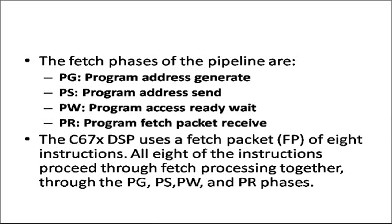The address generated in PG will be sent in the PS phase — program address send. The third phase PW is program access ready wait; the CPU waits until the memory location to be accessed is ready. Once it becomes ready, in the PR phase — packet receive — the data related to that address is fetched into the CPU.